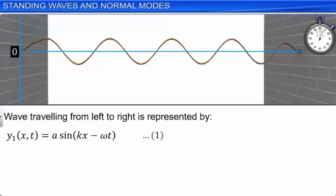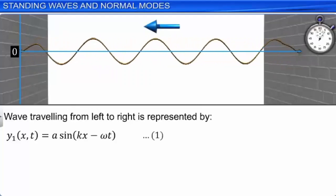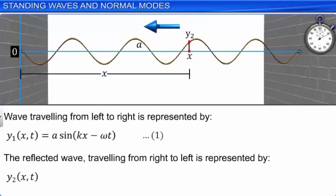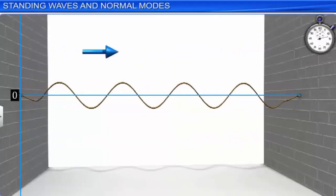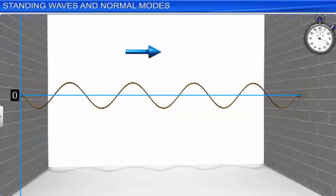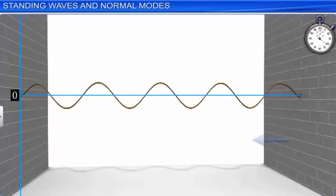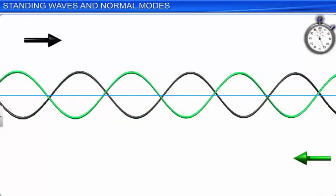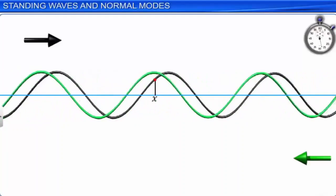The reflected wave can be represented by y2(x,t) = a sin(kx + ωt). Let this be equation 2. The reflected wave, on reaching the left end, gets reflected again and travels to the right. This process of reflection continues endlessly. At any point x and at any time t, there are always two overlapping waves — one moving to the right and the other moving to the left.